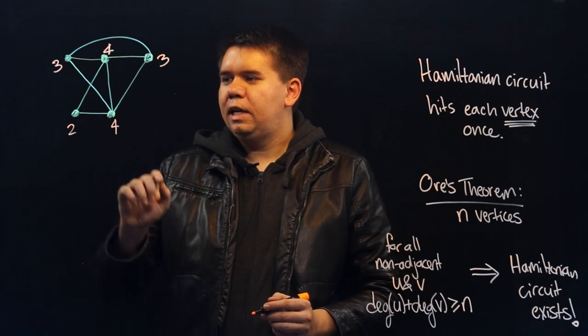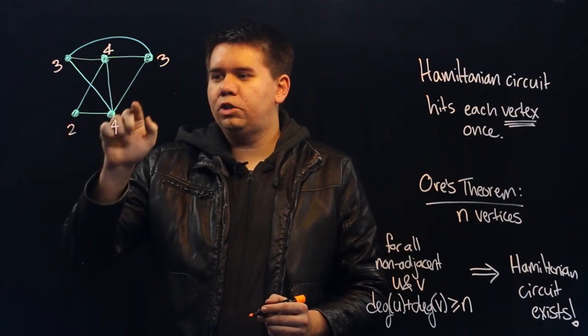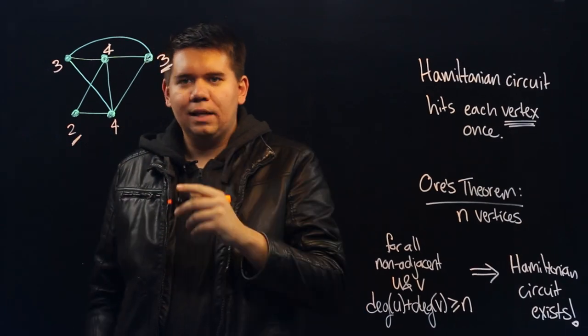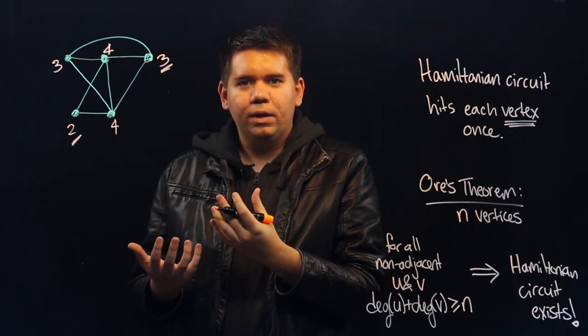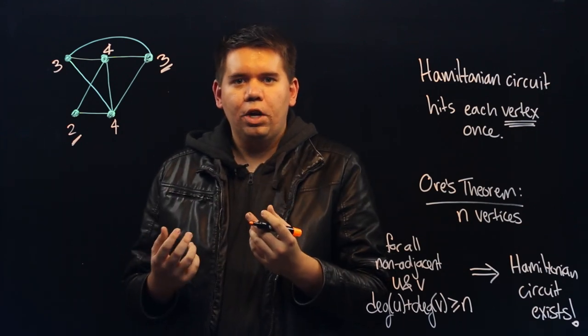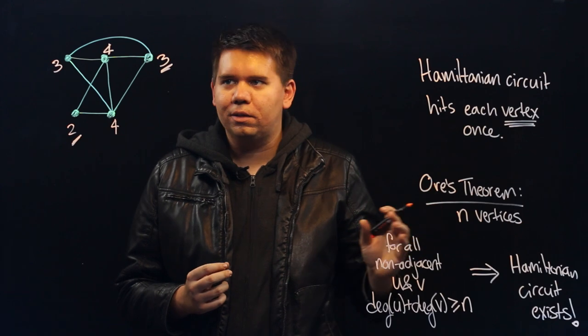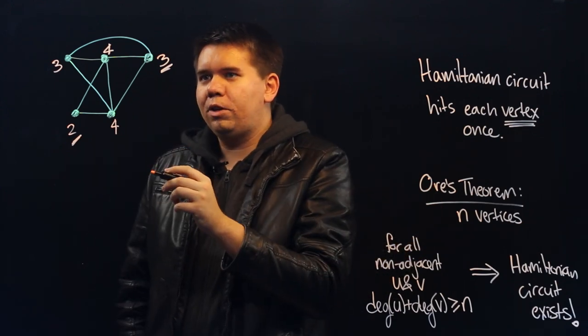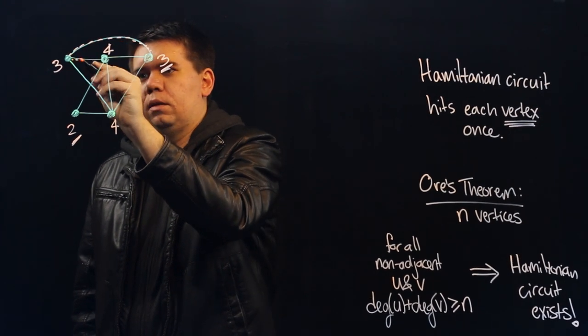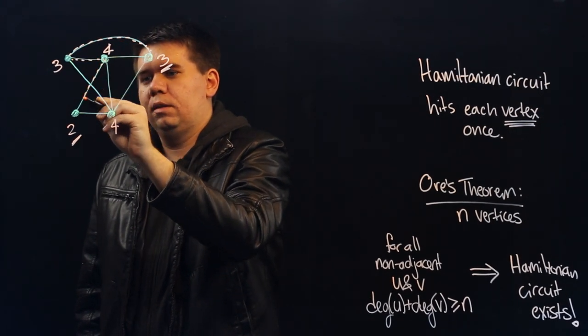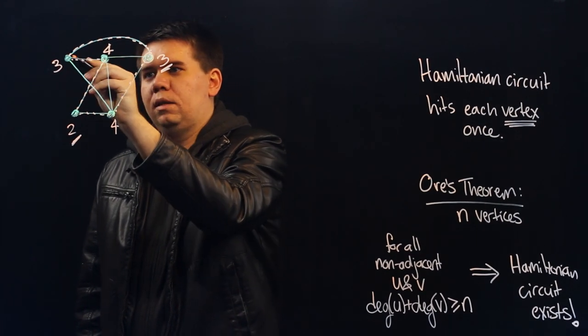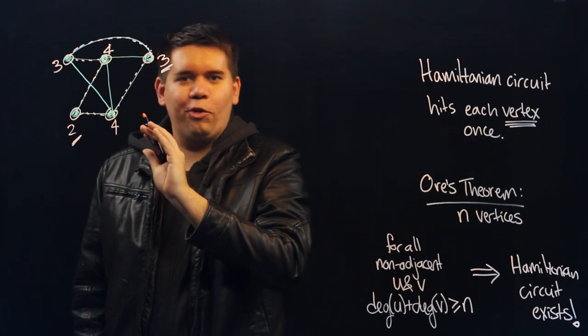Let's look at this example. If you look at any two non-adjacent vertices, for instance this 2 and this 3, since it sums to 5, the sum of any two non-adjacent vertices always gives you 5, you will have the existence of a Hamiltonian circuit. And sure enough, you can think about such a way that you would travel along this graph such that you hit each vertex exactly once.